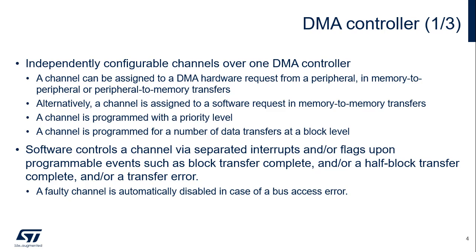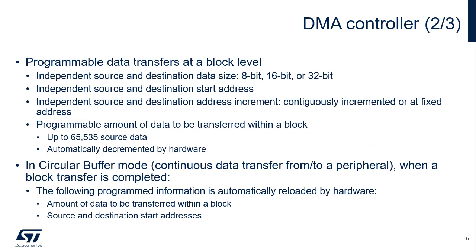A faulty channel is automatically disabled in case of a bus access error. A channel is programmed for a number of data transfers at a block level with independent source and destination data size, independent source and destination start address, independent source and destination address increment, either contiguously incremented or at a fixed address, and a programmable amount of data to be transferred within a block, up to 65,535 source data, automatically decremented by hardware.